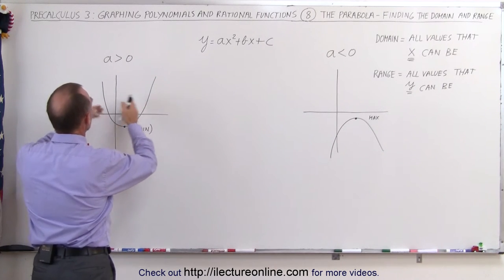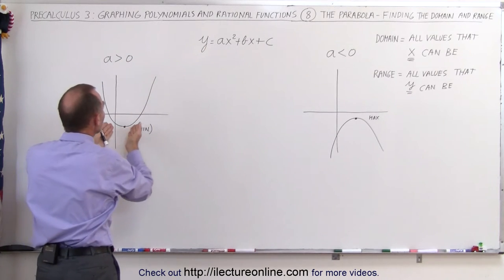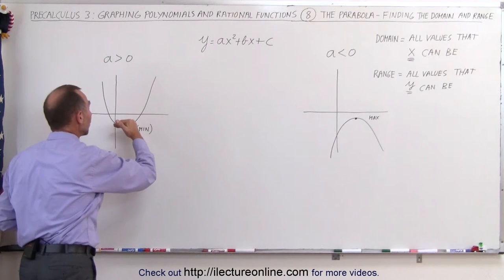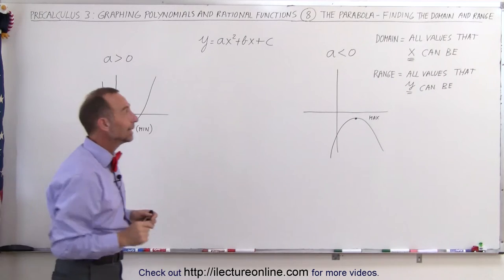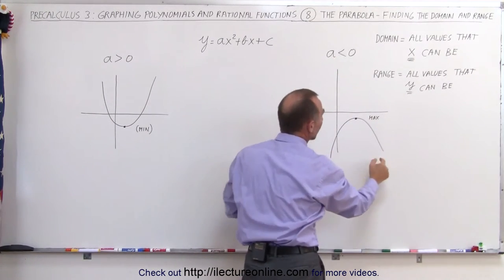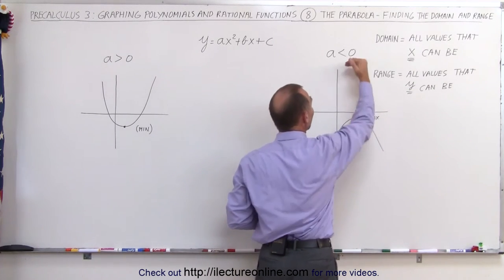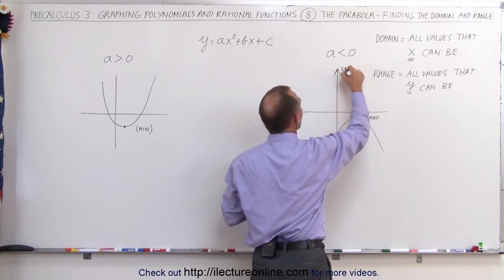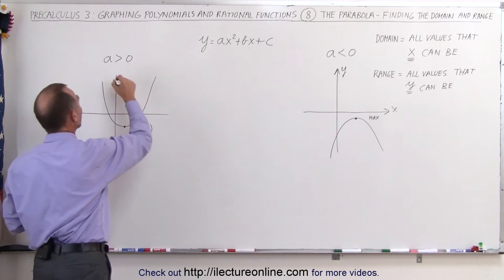If the coefficient in front of the first term is positive, the parabola opens upward, which means there's a minimum value and there can be no values below that point. In the case where the coefficient is negative, the parabola opens downward, meaning there's a maximum value at the vertex and there can be no values above that point. Notice we're talking about the y-direction, which is associated with the range, not the domain.